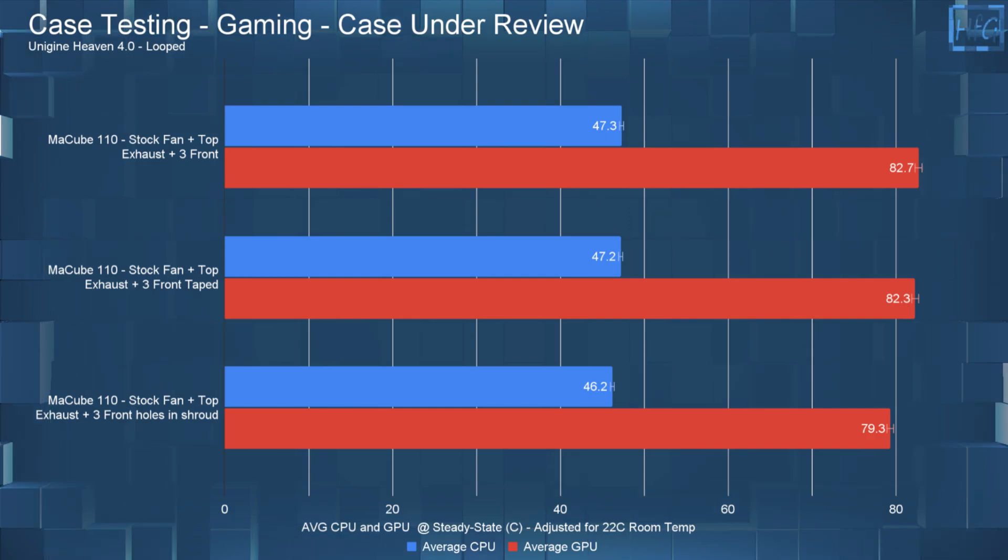Then with the holes in the shroud the CPU temperature went down one Celsius to 46.2 C and the GPU went down three Celsius to 79.3 C. So both the GPU and CPU were lower which was actually quite surprising.